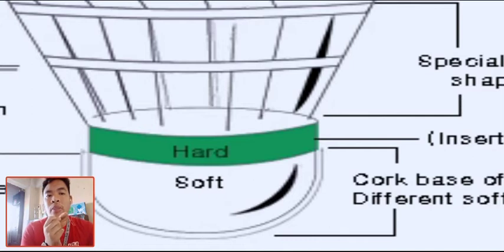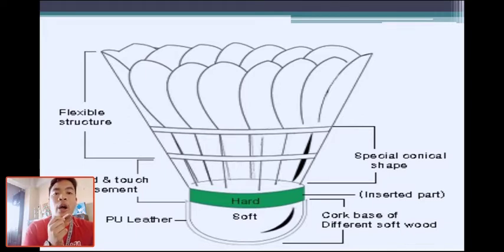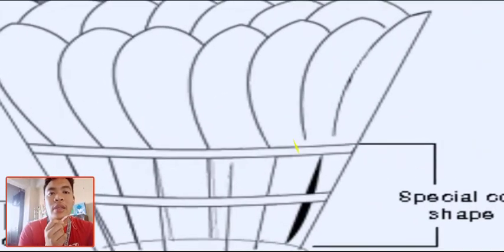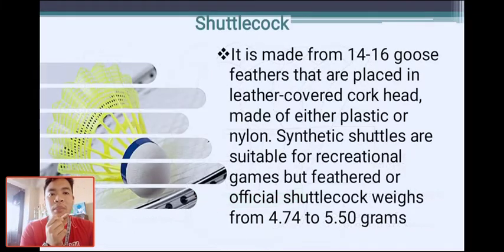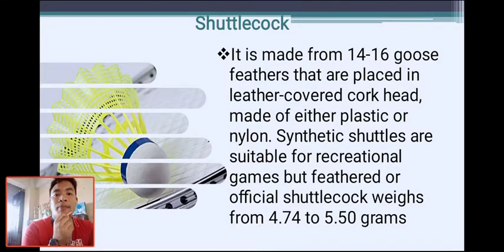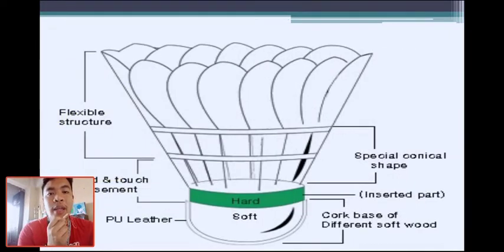The cork base can be hard or soft. The feather layer of the shuttlecock can be made of actual feathers or nylon, though feathers are preferred. For the shuttlecock to be used in play, it must weigh between 4.74 to 5.50 grams. A good quality shuttlecock is lighter and better for playing.